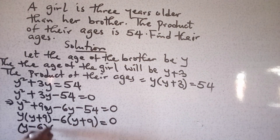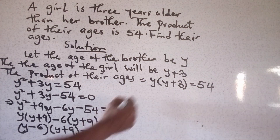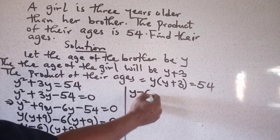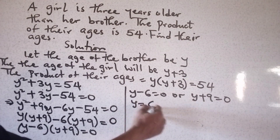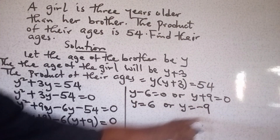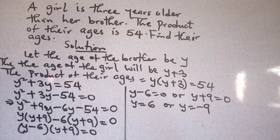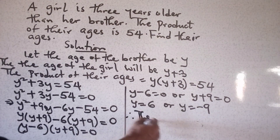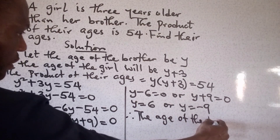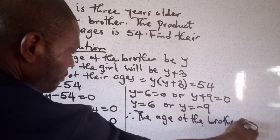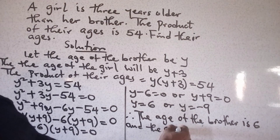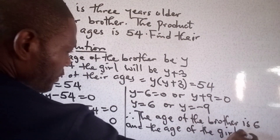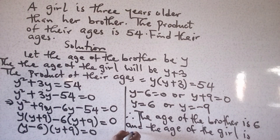Factorizing properly: Y(Y plus nine) minus six(Y plus nine) equals zero, so we have (Y minus six)(Y plus nine) equals zero. We cannot use minus nine because we don't have a negative age, so the age of the brother is six years, and the age of the girl is Y plus three.